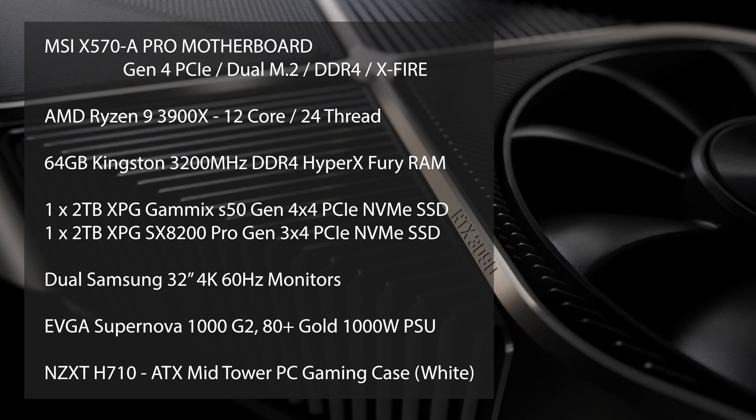Right after I purchased this, the 3950 came out, but that's not a big deal because this was also built in anticipation of the 5000 Ryzen CPUs. Once the 5950X comes out, this system will be complete. If I wasn't anticipating the 5000 series, I probably would have built this with an Intel chipset, but that's why I went with the AMD platform.